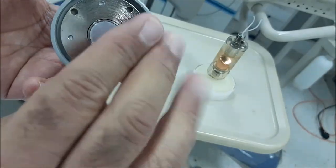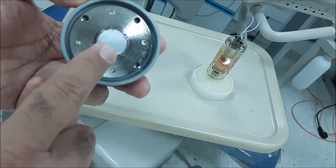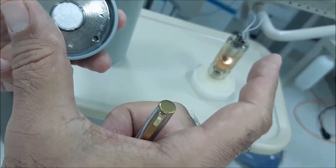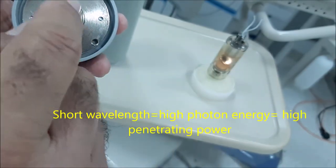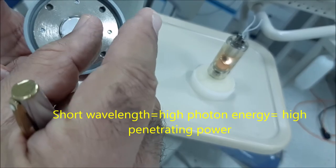The aluminum filter is going to stop all these photons that have low penetrating energy, meaning they have a very high wavelength.